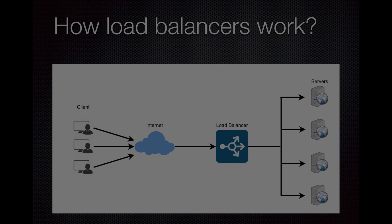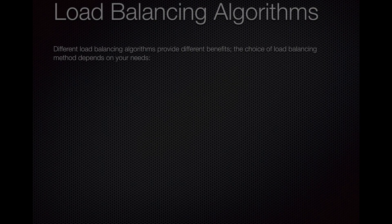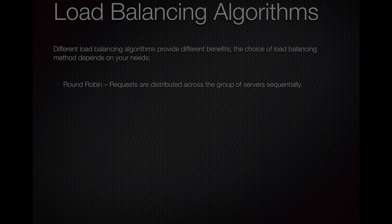Let's talk about a couple of load balancing algorithms. The first is Round Robin — requests are distributed across the group of servers sequentially. If you have two servers in your pool, the first request goes to server one, the second to server two, the third back to server one, and so forth.